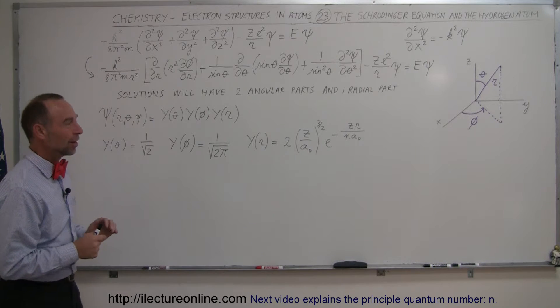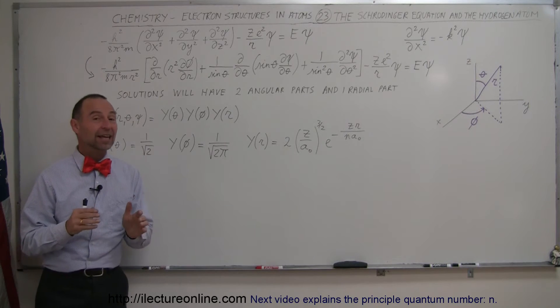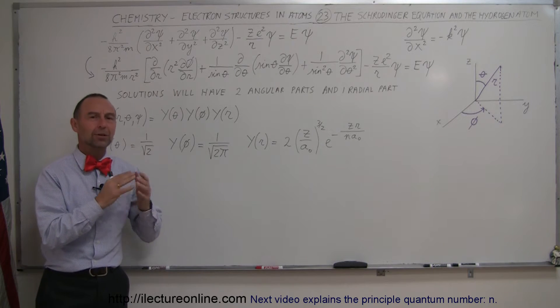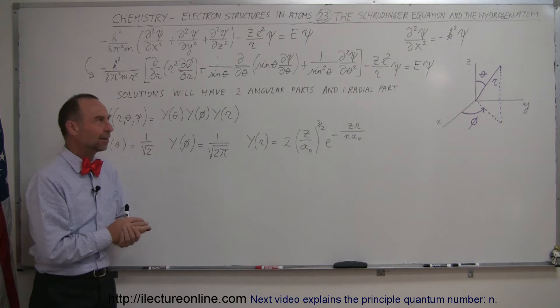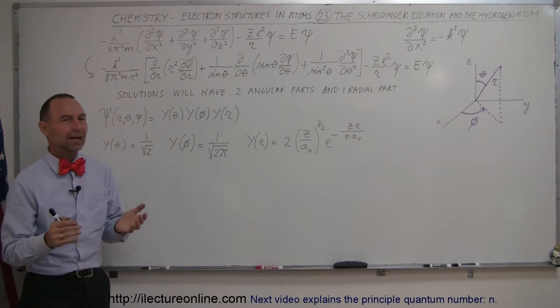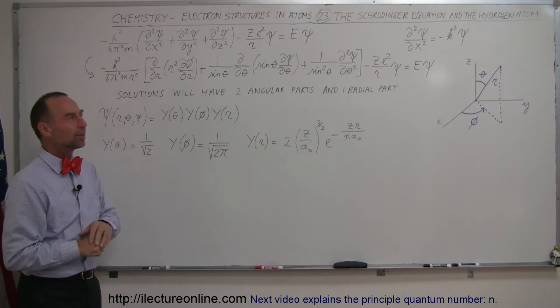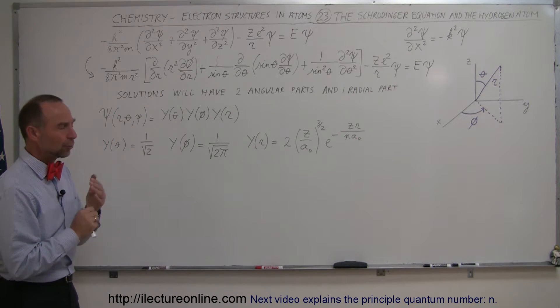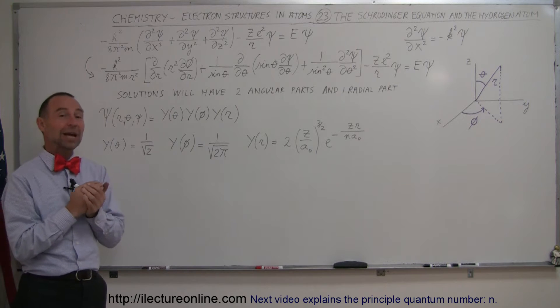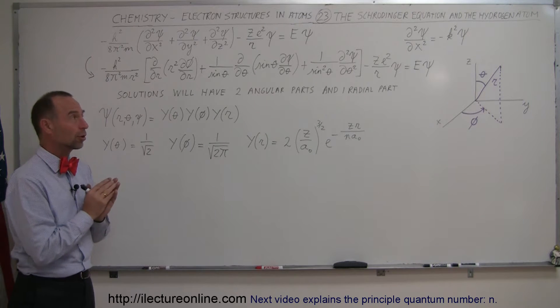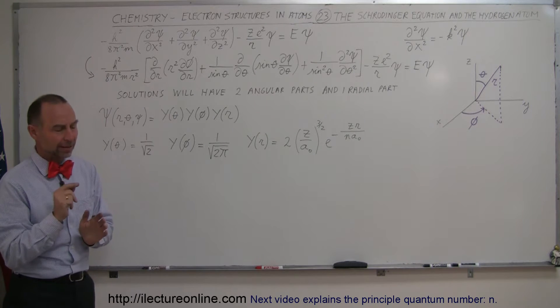Here's our next video on trying to understand how electrons exist around the orbits of atoms. The hydrogen atom is the one that we're going to be talking about the most. And in order to accomplish that, we have to take another look at the Schrödinger equation.